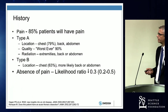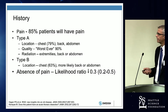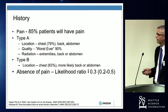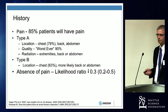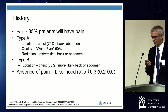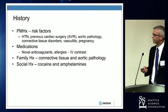The pain characteristics are really important. In type A, most patients say it's in the back of the chest, the back, or sometimes the abdomen — it's the worst ever and it radiates into the extremities or the back of the abdomen. Type B is more likely the back of the abdomen. Absence of pain doesn't mean they don't have a dissection; it just means it's less likely.